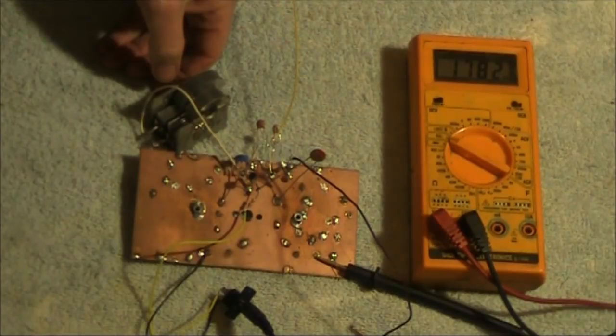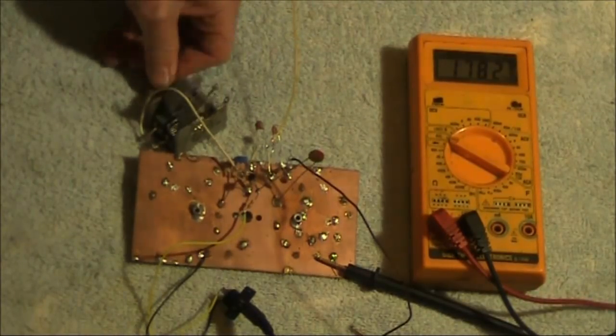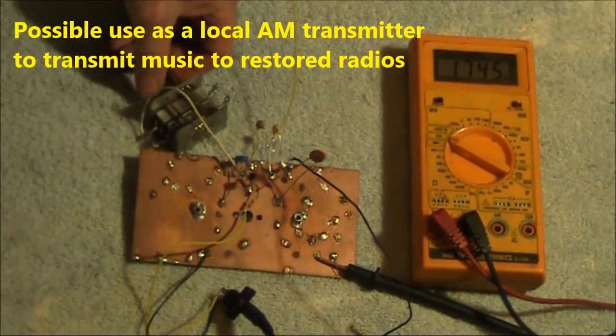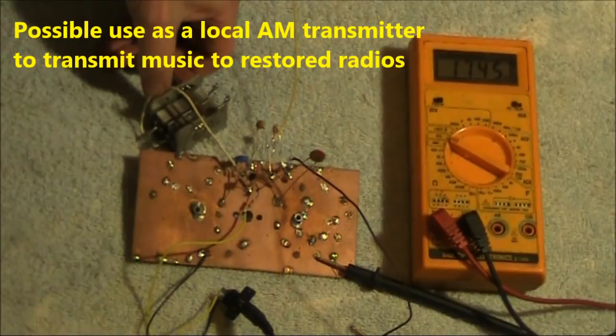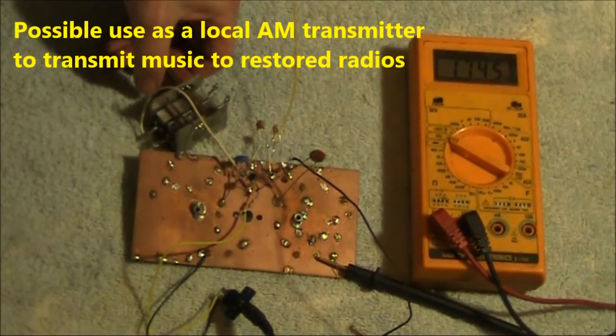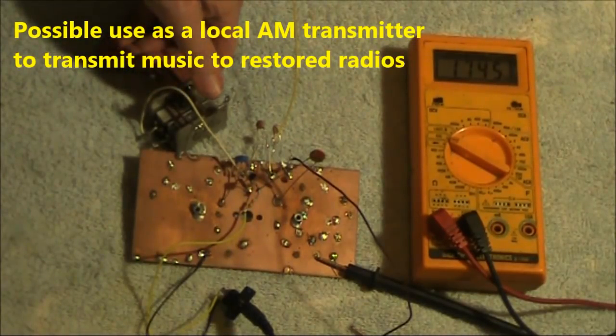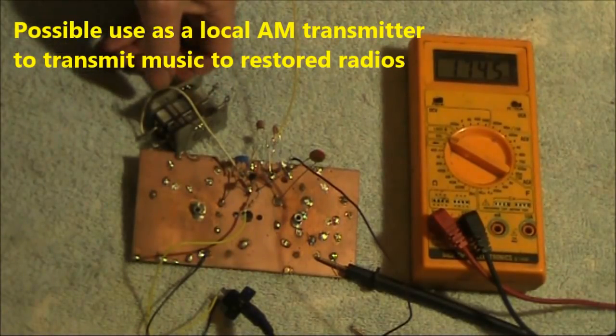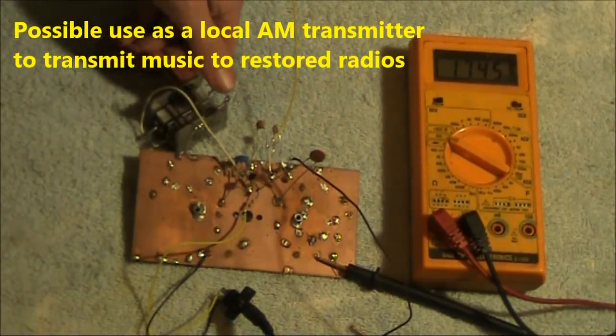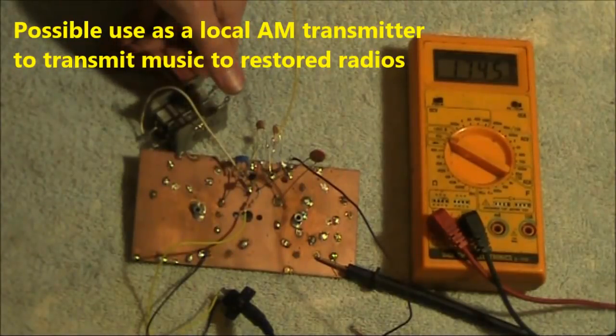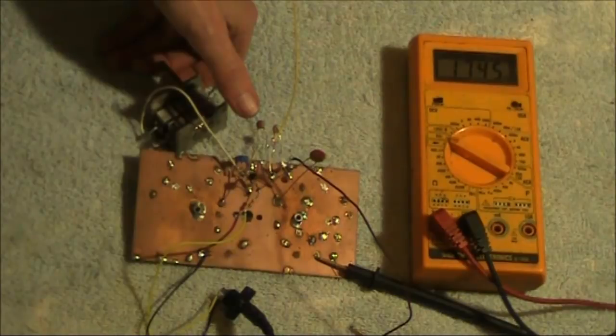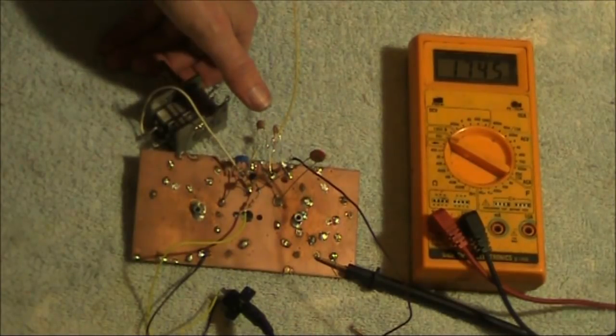But there are some possible other applications. If you wanted to experiment with a low-power AM broadcast transmitter, for example, if you're restoring a valve radio and wanted to play some old-fashioned music, then you could possibly pull the receiver up to a bit above 1.6 MHz, and have this circuit as a local oscillator transmitting a signal. You'd need a few other stages to buffer the oscillator and to provide low-power AM modulation.